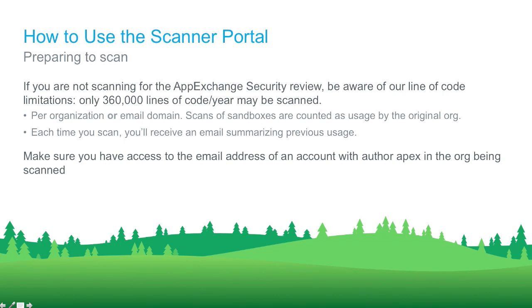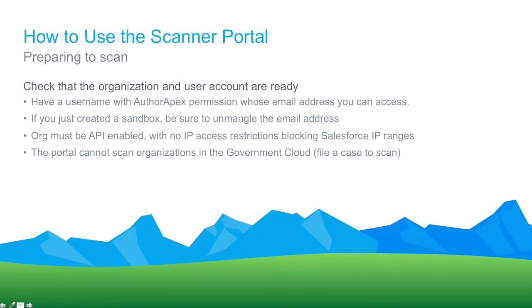Each time you scan, you'll receive an email summarizing your previous usage, so you know how many lines of code you've scanned and how many you have left. Make sure you have an Authorize Apex username in the org you want to scan. If you created a sandbox, be sure to unmangle the email address. Since we use the metadata API to pull your code, your organization must support the metadata API, and you can't have any IP access control restrictions blocking Salesforce IP ranges. We're not able to scan government cloud users through the portal — file a support case instead.